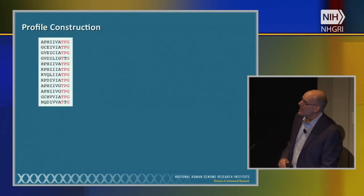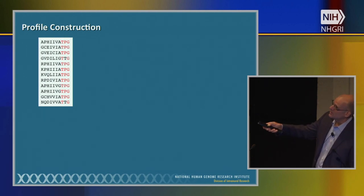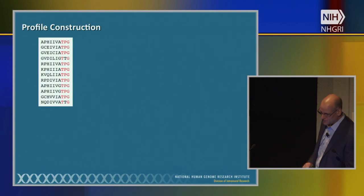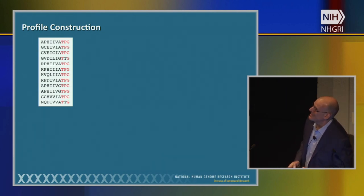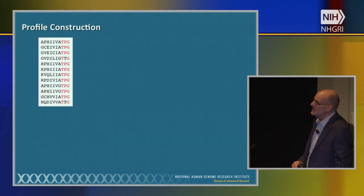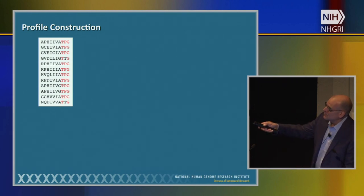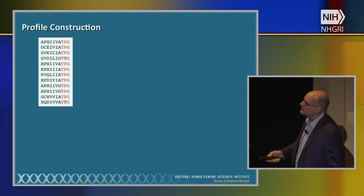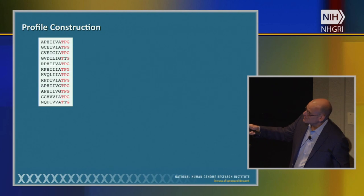So how do we actually go about getting these profiles? We start with a multiple sequence alignment — 10 residues across in this example. I want to pay particular attention to the last three positions. At position 10, there is a glycine conserved across all sequences. At position 8, there's a threonine in every sequence. But at position 9, most sequences have a proline while some have a threonine.